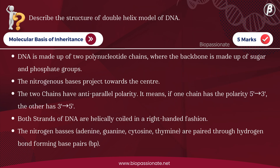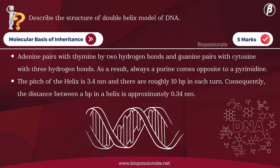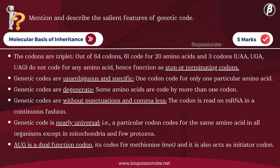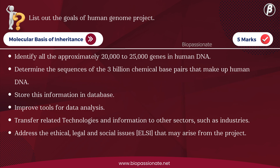Describe the structure of the double helix model of DNA — for five marks. Mention and describe the salient features of the genetic code — for five marks. List out the goals of the Human Genome Project — for five marks.